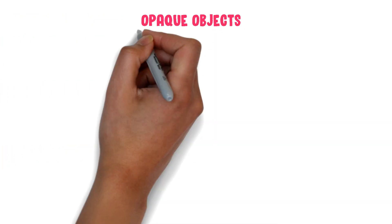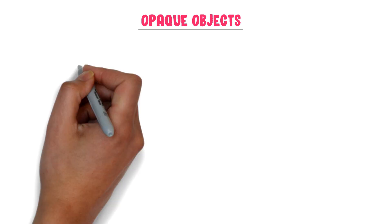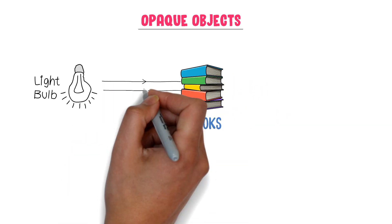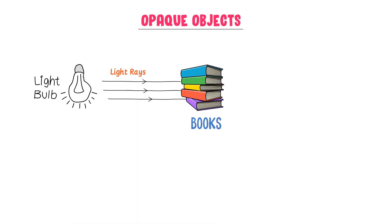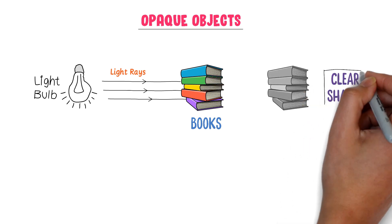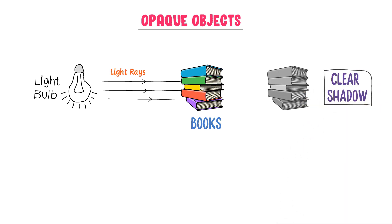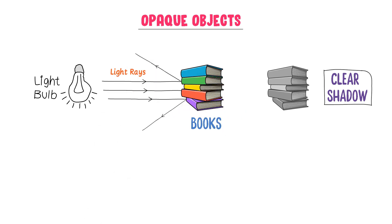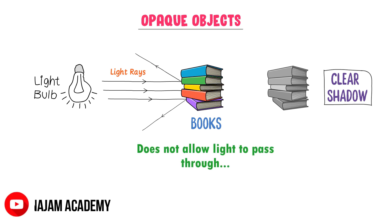Now what about opaque objects? Well, again consider a luminous object like a bulb that produces light. I place a book in front of the bulb. Now light rays are hitting the book. On the opposite side, we see that the book is not allowing any light to pass through it and a clear shadow is formed. The book absorbs some light and reflects the remaining rays of light. Thus, the book is an opaque object because it does not allow light to pass through it and forms a clear shadow.